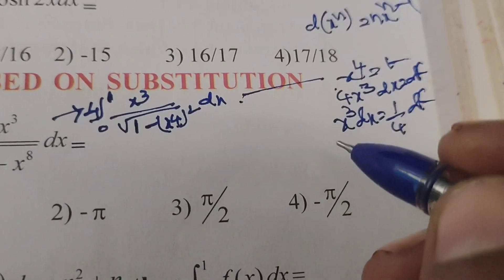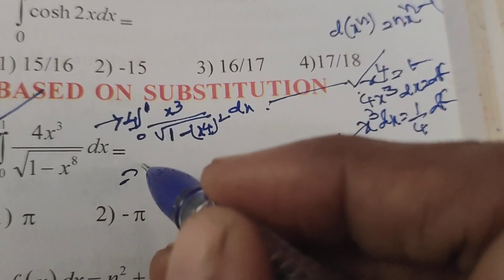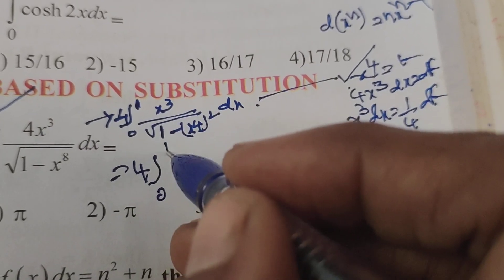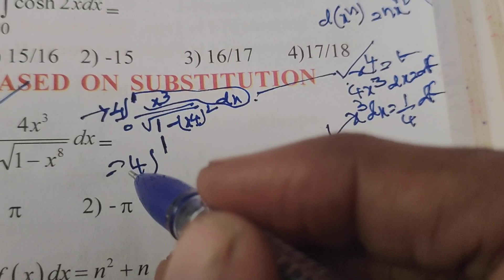So substitute into the given integral of the problem: 4 into integral 0 to 1, x³ dx means write 1/4.